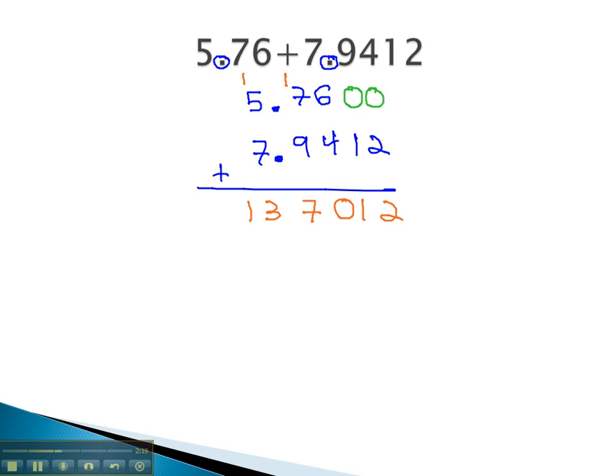Then we need to decide where to place the decimal. The decimal will come straight down into the problem, straight down in place value, 13.7012 or 13 and 7,012 ten thousandths.